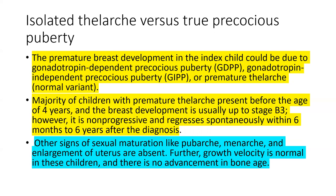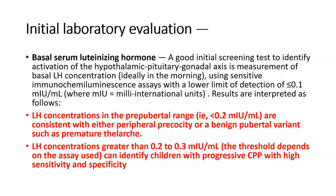We must determine whether this is isolated thelarche or true Precocious Puberty. Premature thelarche is a normal variant — the majority of children present before age 4, breast development may reach Stage 3 but is non-progressive and regresses spontaneously within 6 months to 6 years. In premature thelarche, there will be no pale or pink vaginal mucosa, no accelerated growth, no pubarche, no menarche, no uterine enlargement, and no advancement in bone age.